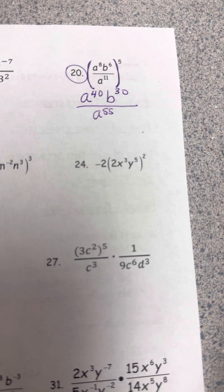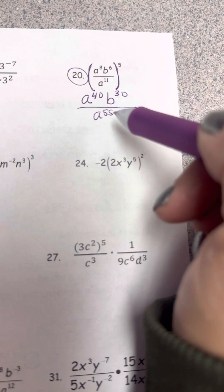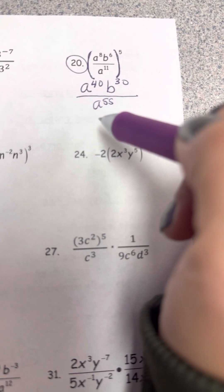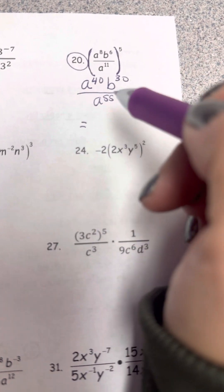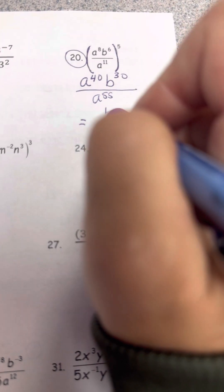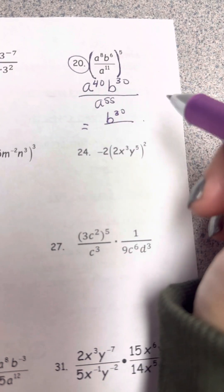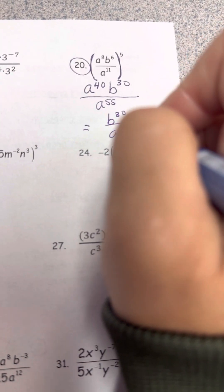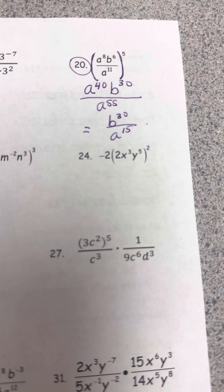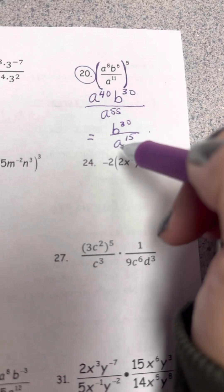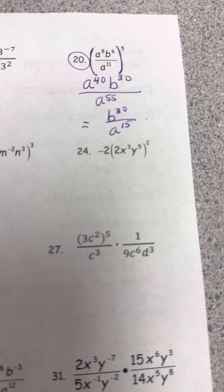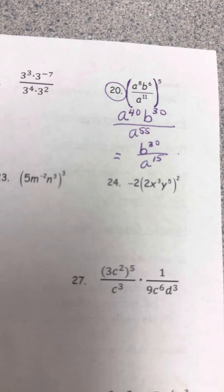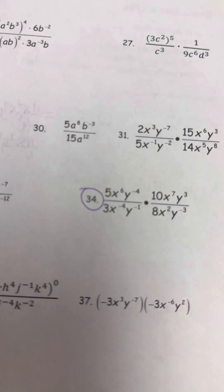Now there are no negative exponents, no parentheses, but a base written more than once. Imagine 40 a's in the numerator and 55 a's in the denominator — 40 cancel out, leaving a to the 15th in the denominator. The b to the 30th stays in the numerator. I can't go further since these are separate bases. No negative exponents, no whole numbers, no parentheses, no repeated bases — I'm done.